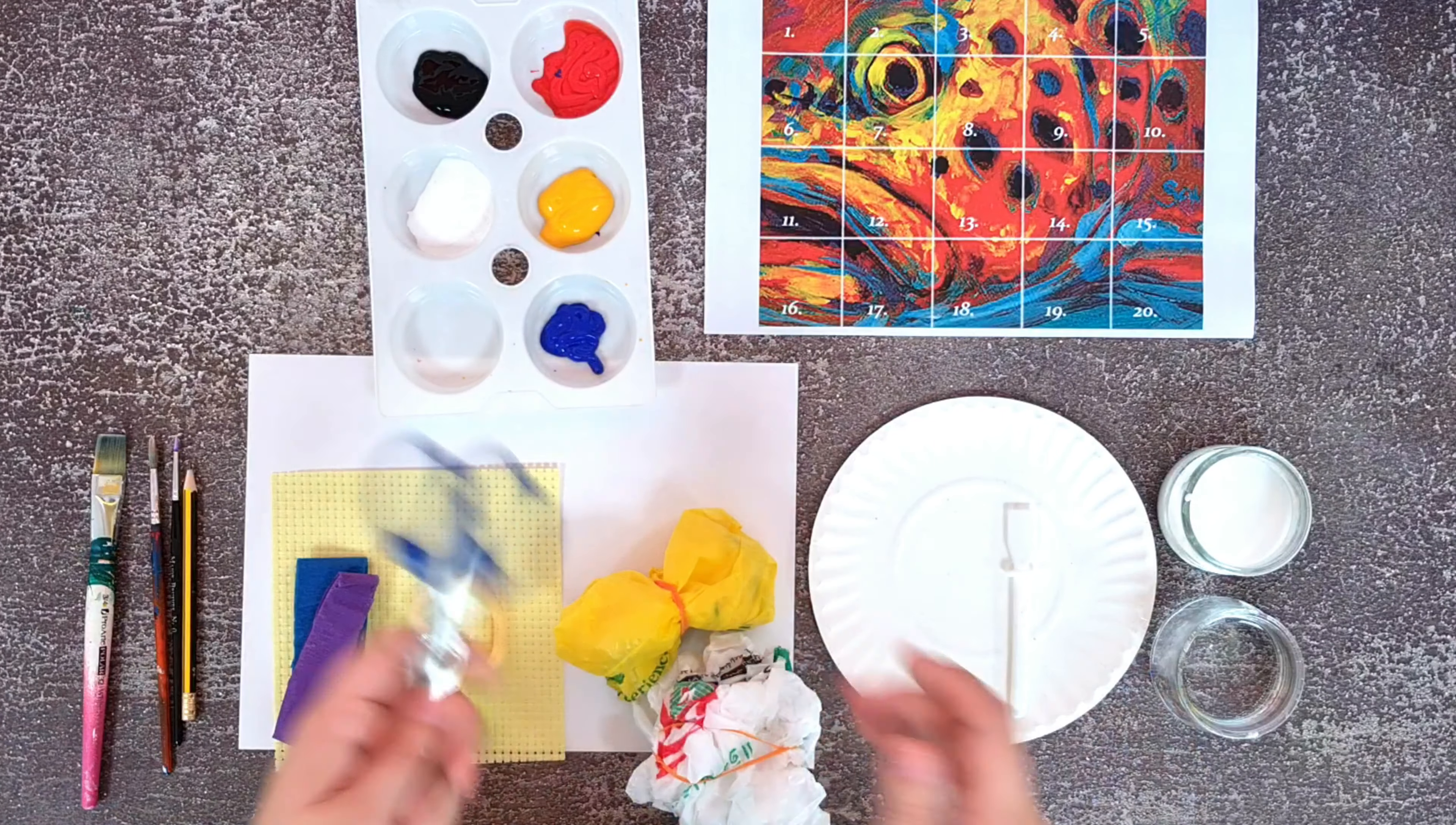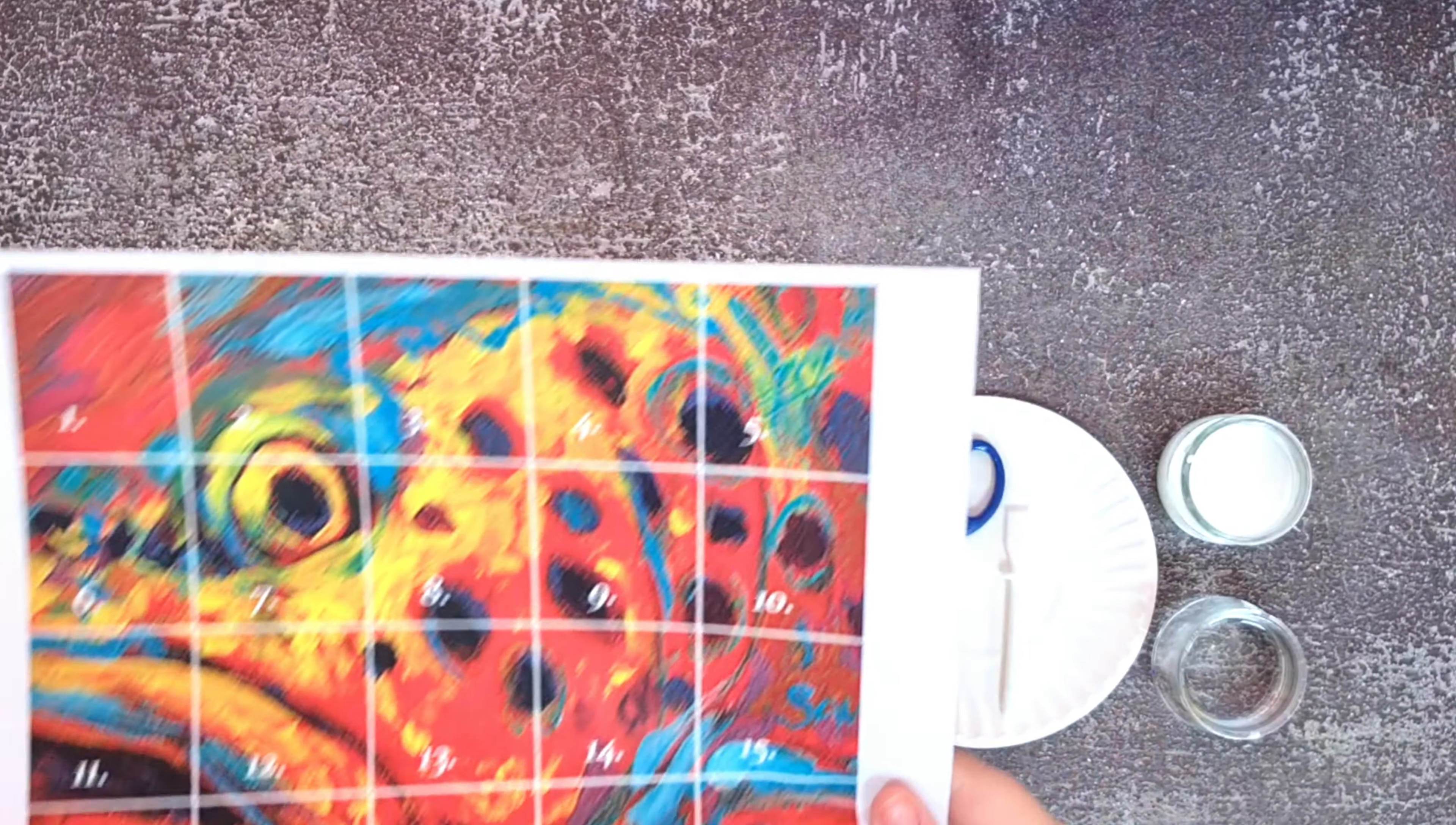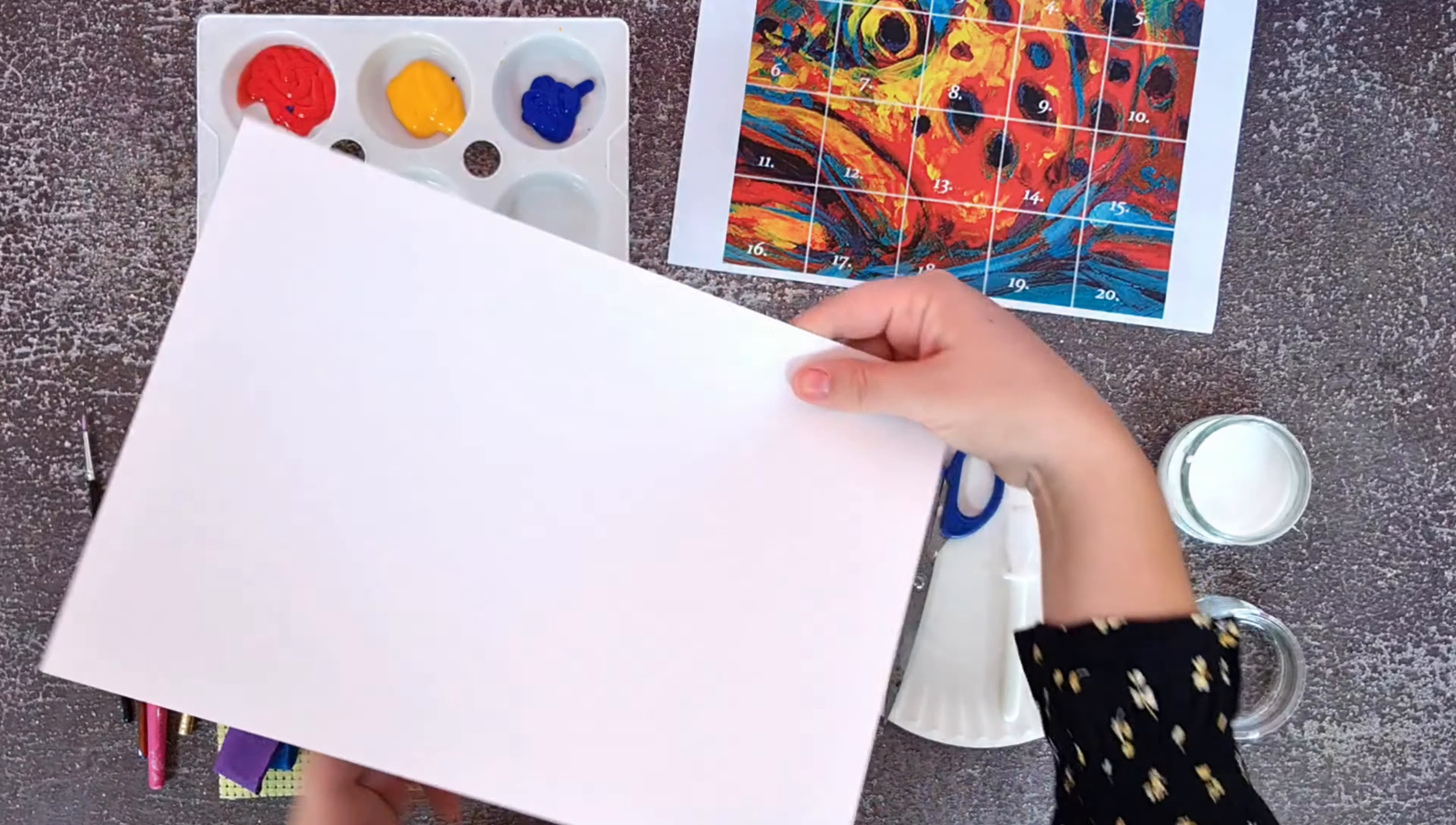So you're going to need scissors, some white or liquid glue if you have some at home, a water pot, and paints here. Now the paint we will need to apply the first underpainting, the first layer. So we've got our primary colours here and then black and white, some paint brushes, a pencil and an A4 sheet of paper.